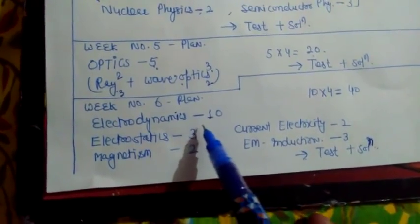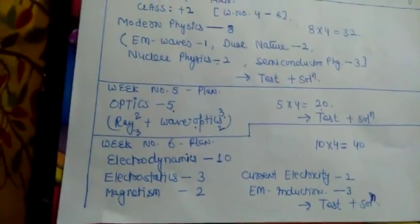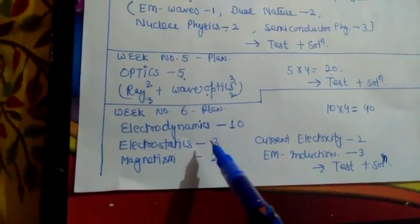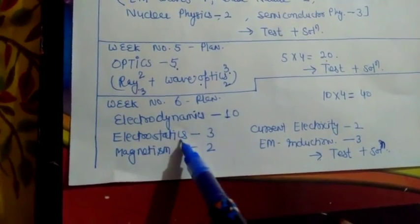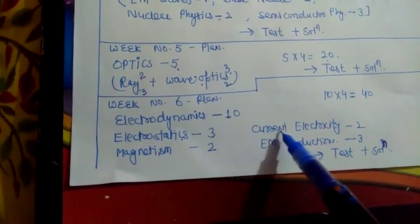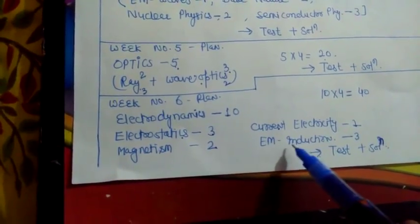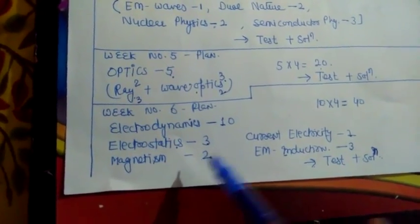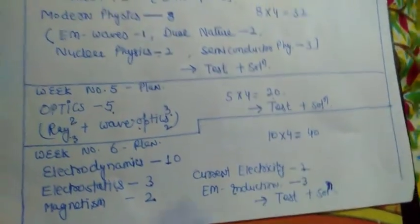From Electrodynamics — it is a lengthy lesson, but with the pressure of the NEET paper we have to keep our pace very fast. From Electrodynamics: three questions from Electrostatics, two from Current Electricity, two from Magnetism, and three from Electromagnetic Induction. So in the last, sixth week, we have to cover 10 questions — 10 into four means 40 marks.